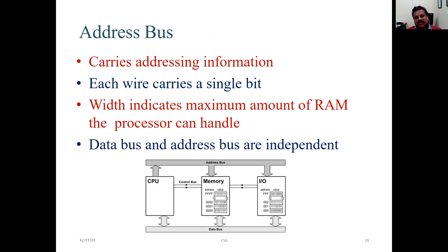Address bus. Address bus features include it carries addressing information. Each wire carries a single bit. Address bus indicates maximum amount of RAM the processor can handle. Data bus and address bus are independent. And here is the image showing address bus, how address bus gets the work from CPU memory input output and how it delivers those words.